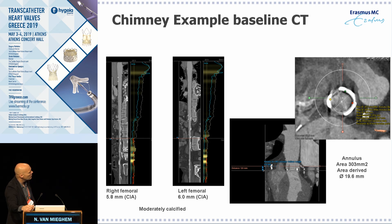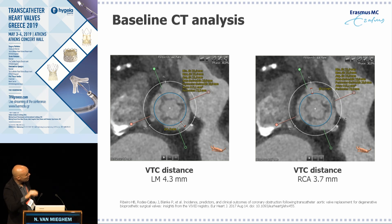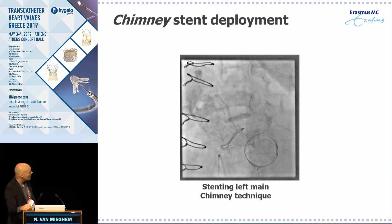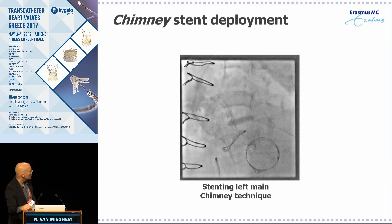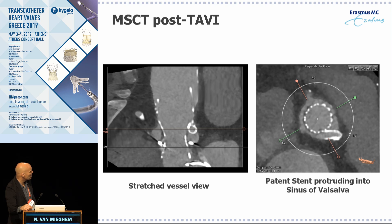We performed a chimney case about two years ago in a patient with a Mitra Flow — a very small annulus where the leaflets extended beyond the ostium of the left main. Another CT view showed the coronary ostium of the left main with a distance to our virtual valve of 4.3 millimeters, but more importantly the leaflets extended beyond the ostium. We were reluctant to proceed without a preventive measure, so we implanted an Evolute and also performed the chimney technique.